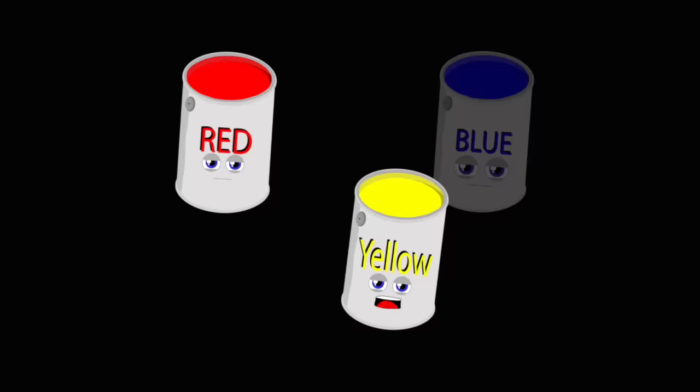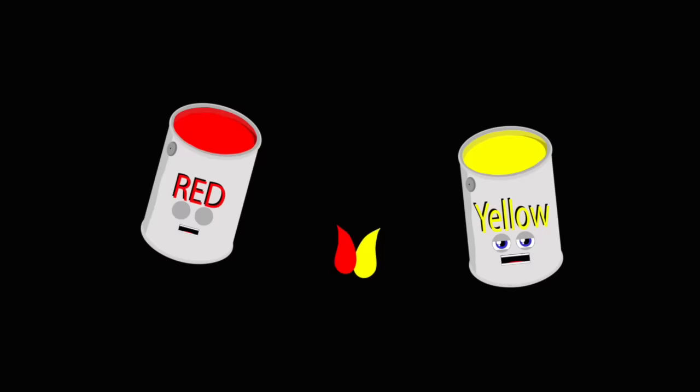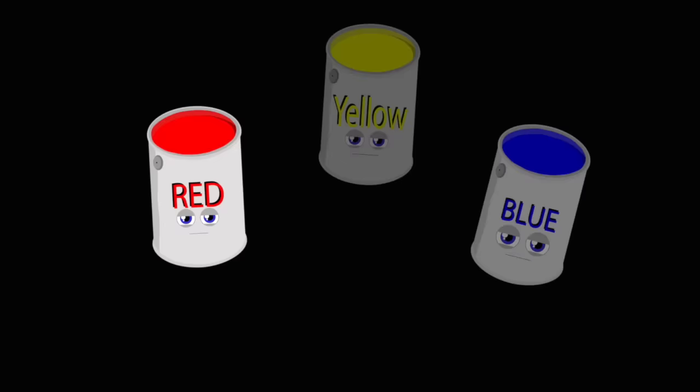I am yellow, I'm a primary color. And I'm red, a primary color too. When you mix us together, we make orange, it's a different hue.